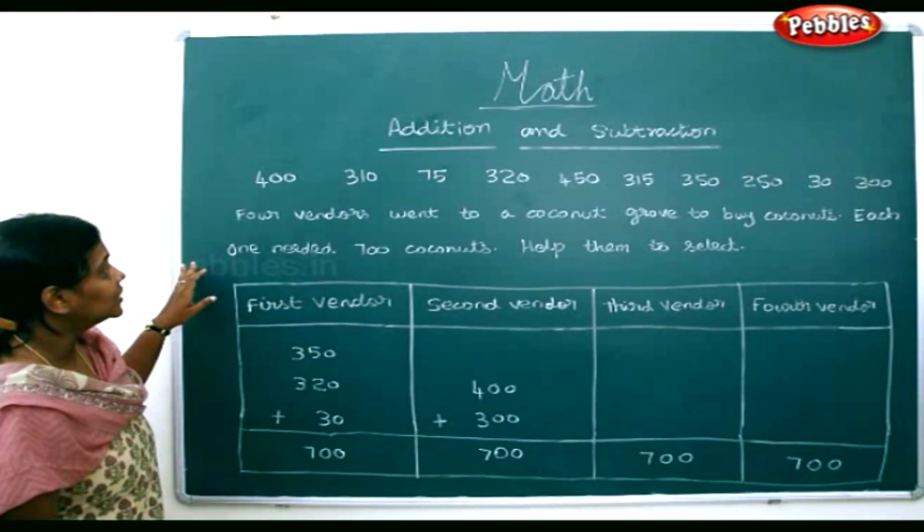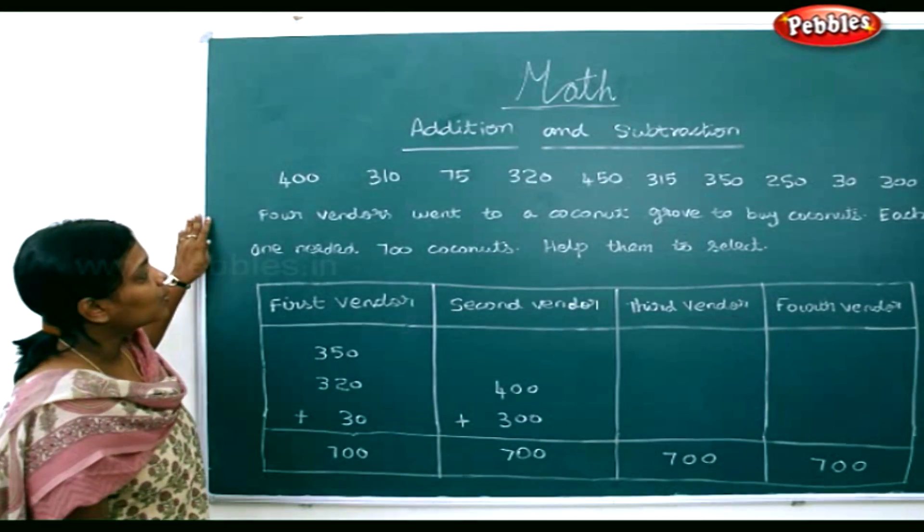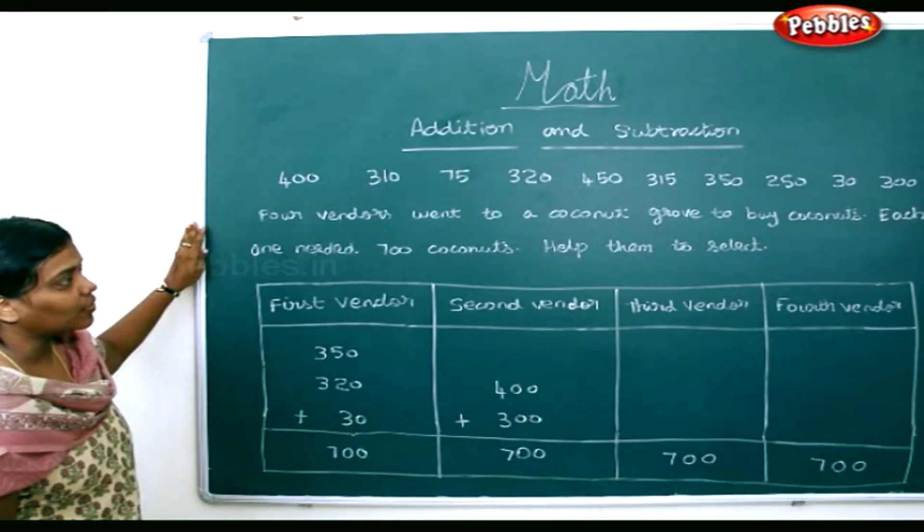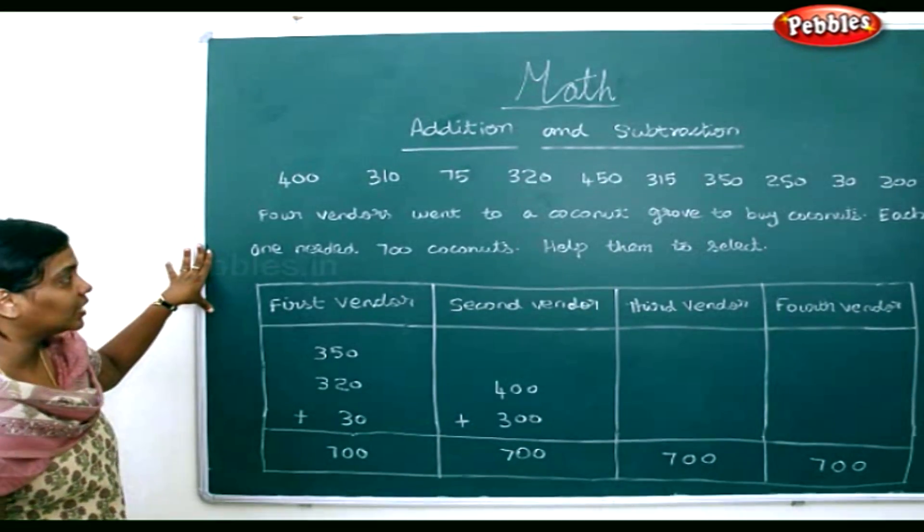We are going to see addition. Let us see an example for addition. Four vendors went to a coconut grove to buy coconuts. Each one needed 700 coconuts. We will help them to select the coconuts.